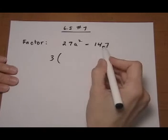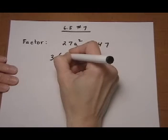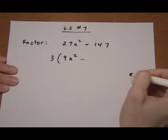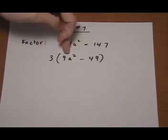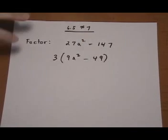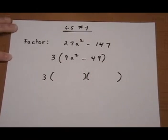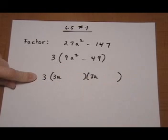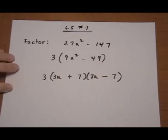I'd try dividing 147 by prime numbers — 2, 3, 5, 7 — and quickly see that 3 comes out. So I get 3 times the quantity 9a squared minus 49. Now I've got perfect squares: the square root of 9a squared is 3a, and the square root of 49 is 7. So I bring down the 3, then apply difference of squares: 3 times (3a plus 7) times (3a minus 7). And that's the answer.